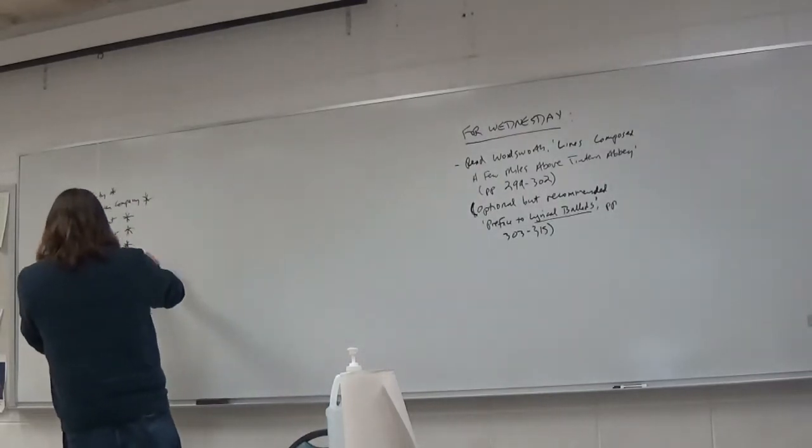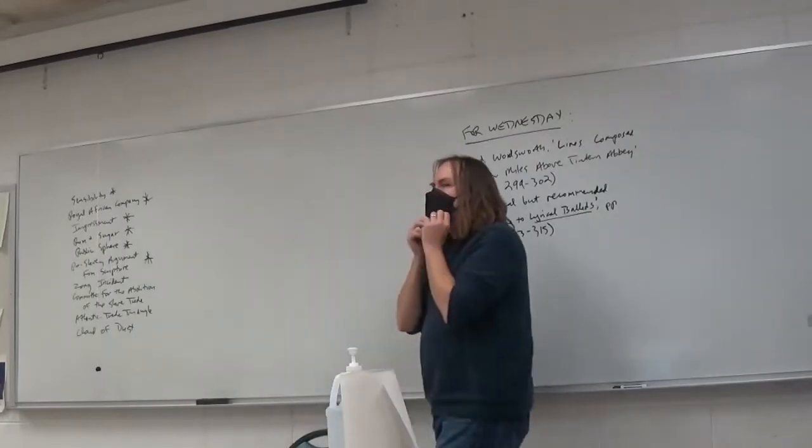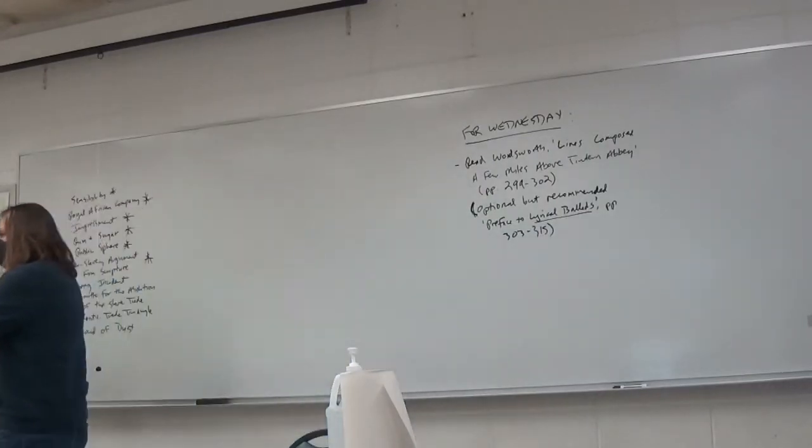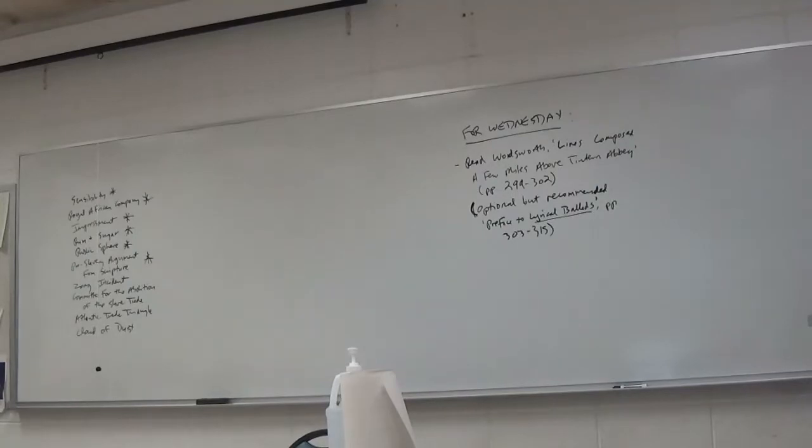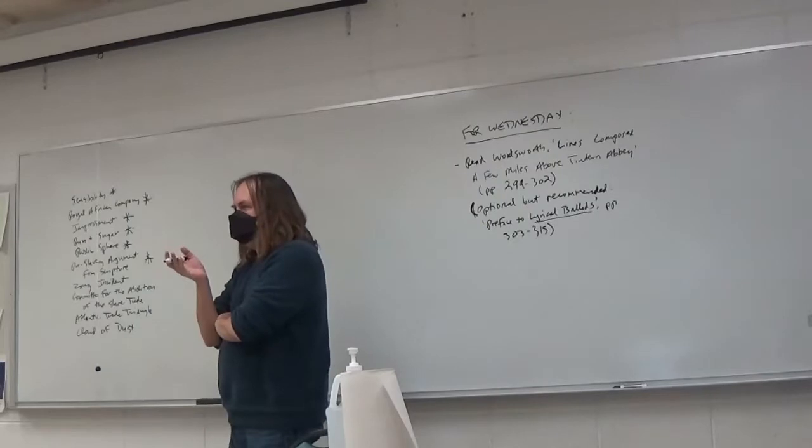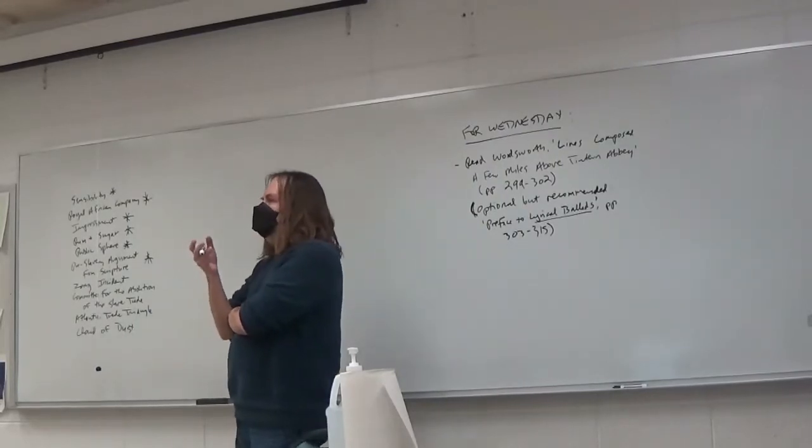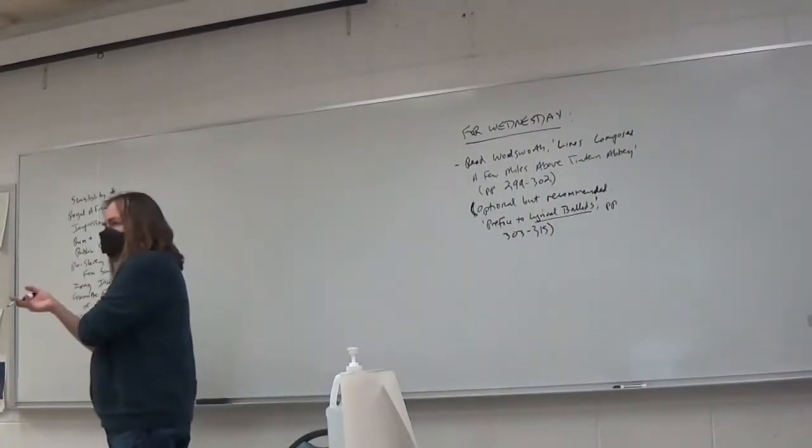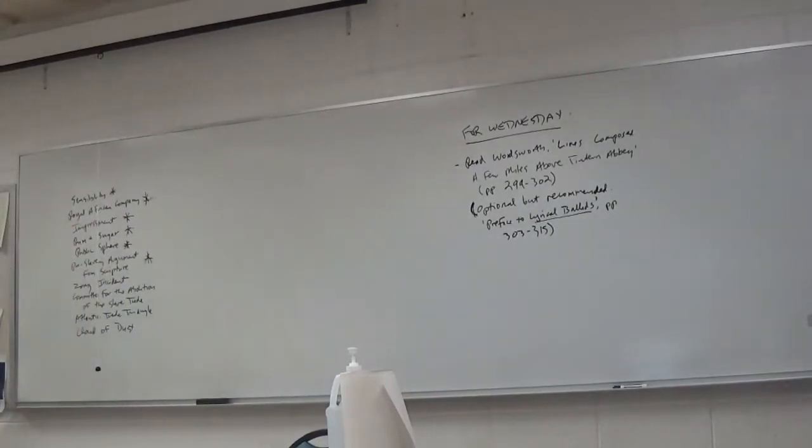What was the pro-slavery argument from scripture? Remember, we talked about a couple of different pro-slavery arguments. I'm asking specifically about the one from scripture. Scripture said it was okay to have slaves, so it should be okay. This is from the William Cobb piece on the slave trade. He argues that the biblical patriarchs owned slaves. Jesus doesn't say anything negative about slavery or slave owners. And if it was okay to own slaves then, then it must still be okay to own slaves now.